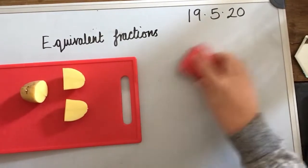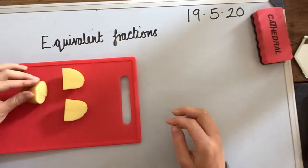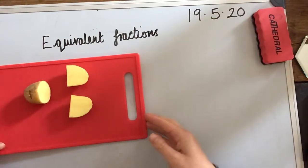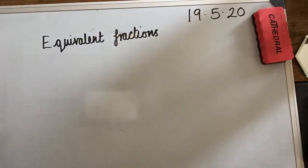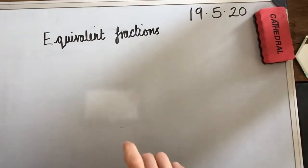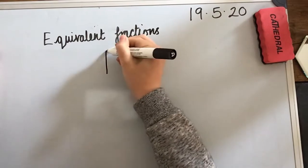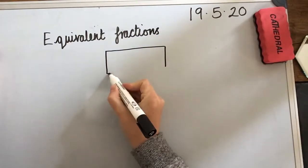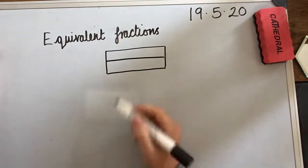So, that's an equivalent fraction with my potato. If you're allowed to, you could have a go with a potato at home — potatoes are magical, they kind of stick back together. But if you can't, don't worry. We're going to move on to some equivalent fractions on my whiteboard now, using more of our bar models. We have done this at school before, so you might be quite confident with it.